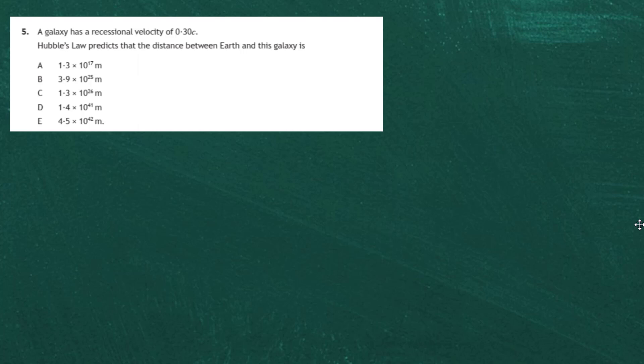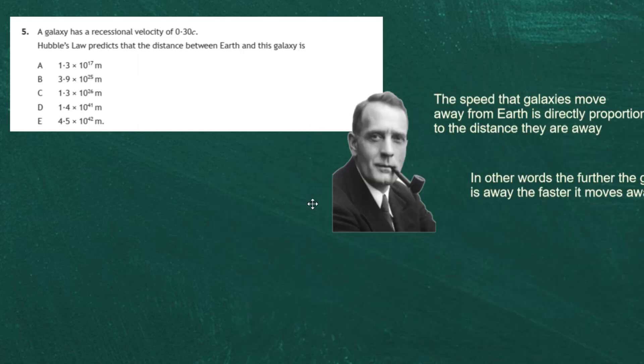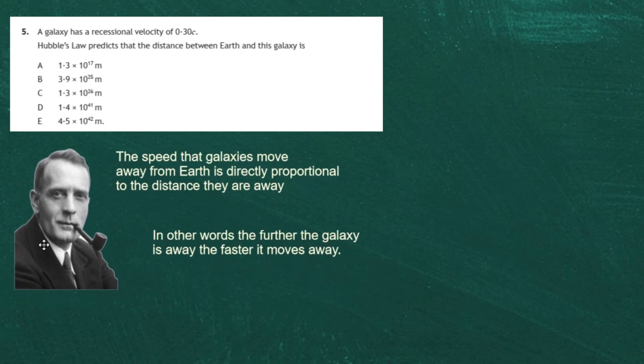What exactly is Hubble's Law? Hubble said the following: the speed that galaxies move away from the Earth is directly proportional to the distance they are away. In other words, the further the galaxy is away, the faster it moves away. So we're looking for an equation where velocity equals a constant times the distance.